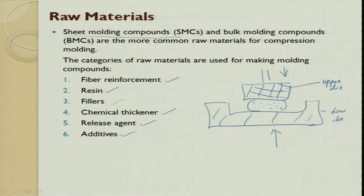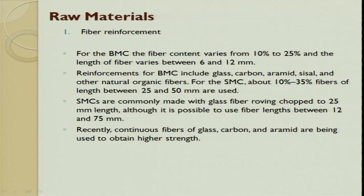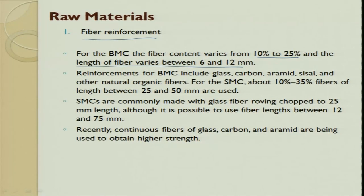Fiber reinforcement volume fraction typically varies from 10% to 25%. Beyond 25%, the fibers restrict polymer flow, viscosity increases, and the polymer cannot fill all points of the die within the stipulated time, resulting in poor quality. Fiber length can vary from 6 mm to 12 mm. For pre-pregs, continuous fiber, woven roving mat, or carbon mat can be used. Reinforcements in BMC include glass, carbon, aramid, and sisal — a natural fiber.